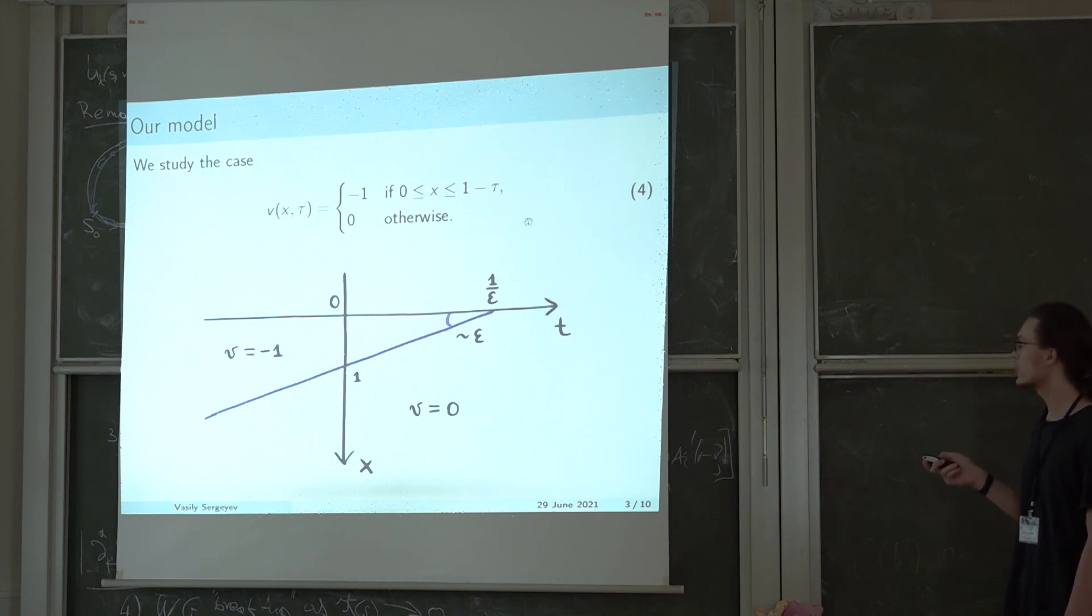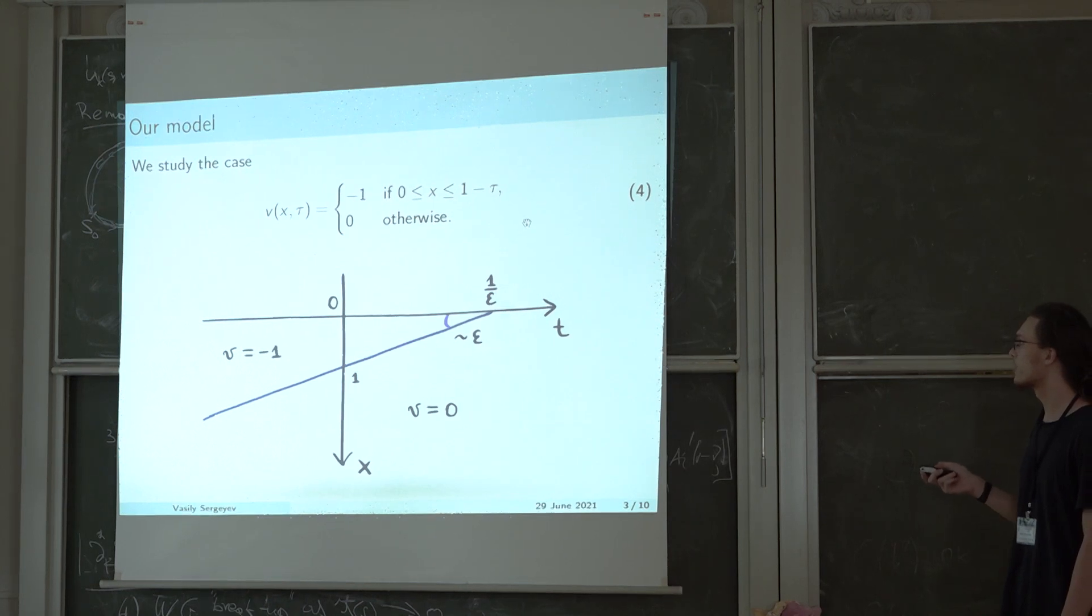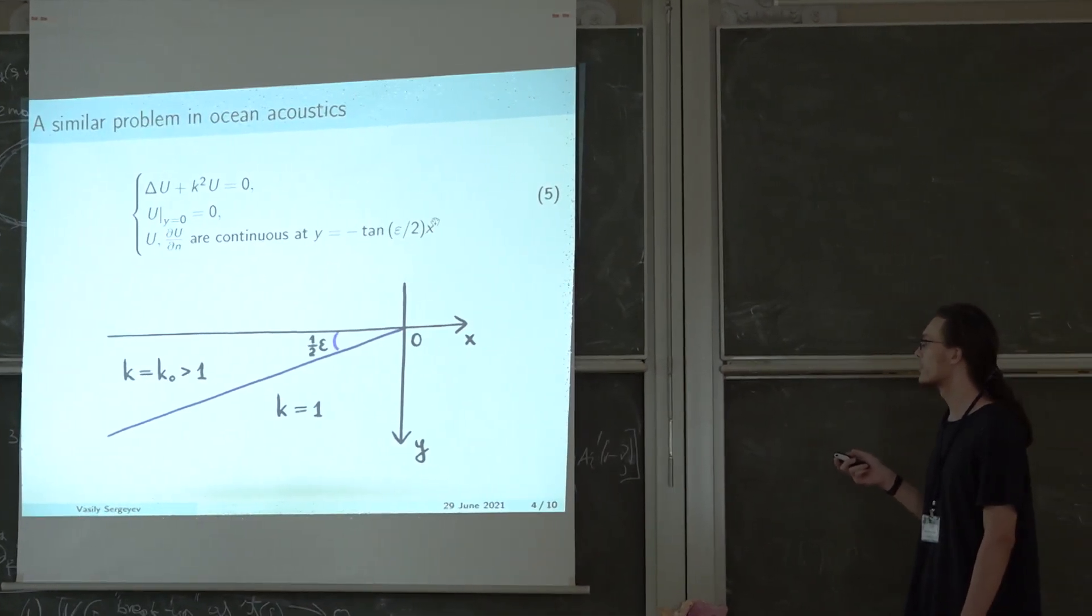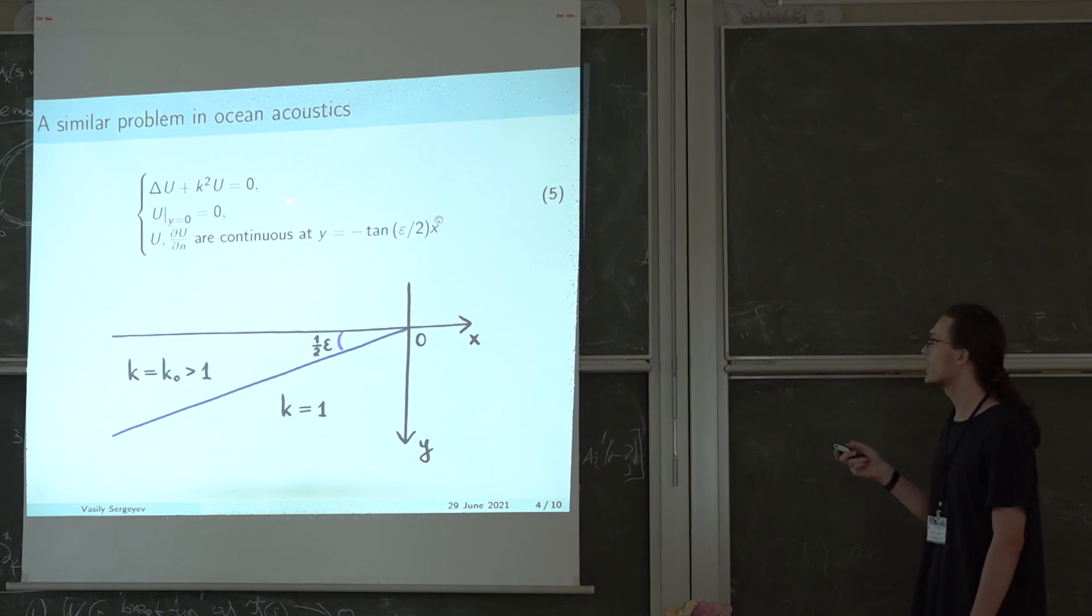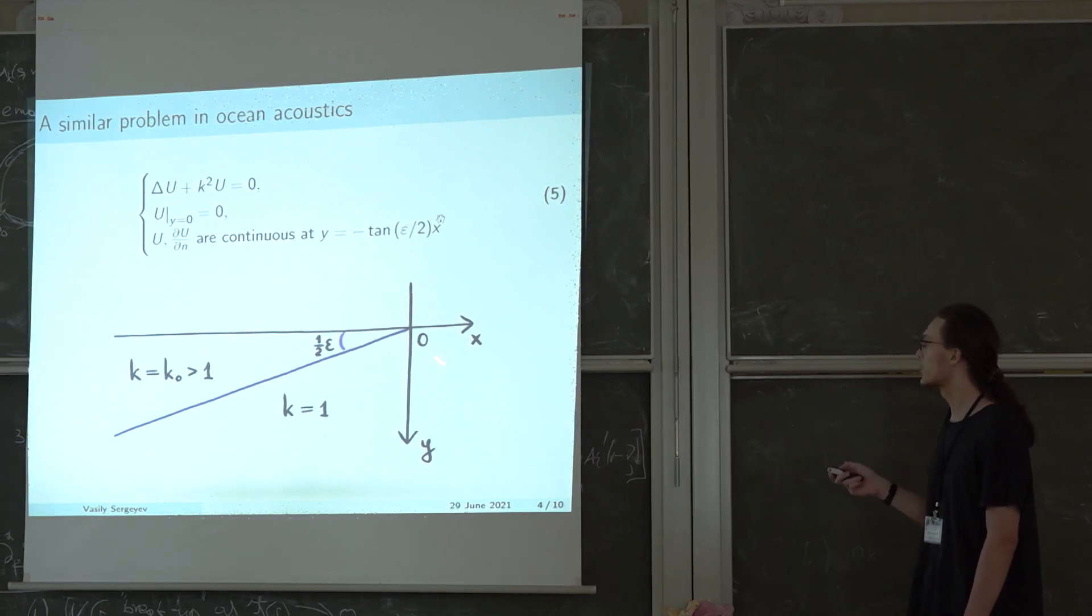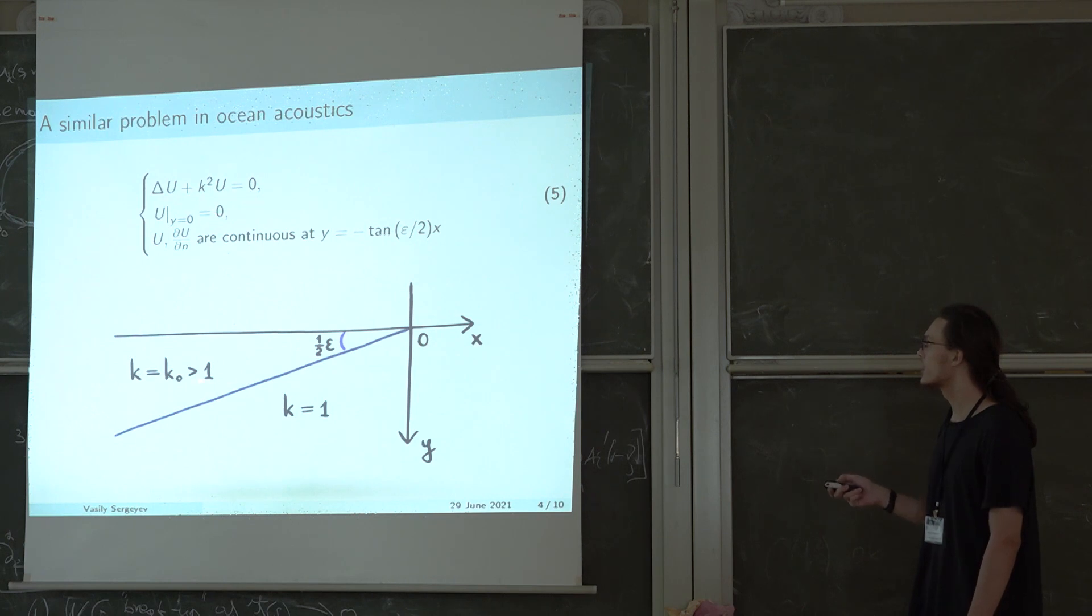This model problem is actually very similar to another problem, a problem in ocean acoustics. Here we have the Helmholtz equation in the half plane where the coordinate y is non-negative. And the refractive index k equals k0, which is constant and greater than 1 in a narrow wedge adjacent to the boundary of the half plane.